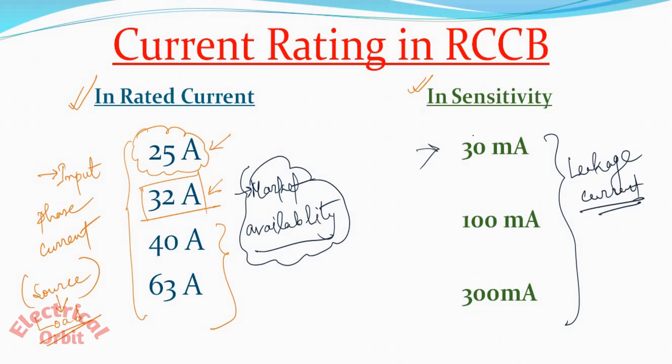And this is the rating of the leakage current. If your leakage current rating is more than 30 mA but less than 100 mA, then you should go for 30 mA RCCB. If it is more than 100 to 300 mA, then you should go for this type of RCCB. And if it is beyond 300 mA, then you should go for that leakage current rating RCCB. So I think the concept of RCCB working principle as well as the entire types are clear to you.